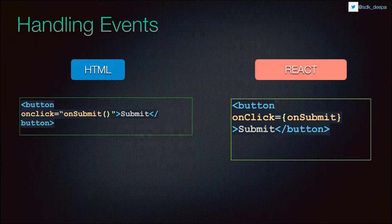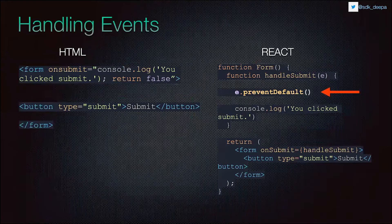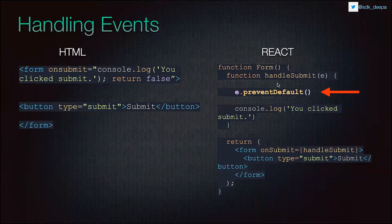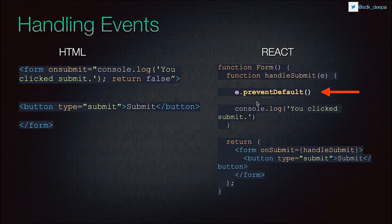Now let's talk about handling events. In HTML you pass event handlers as strings, but in React you pass them as JSX using camelCase — for example, 'onClick' instead of 'onclick'. Another difference is you cannot return false to prevent default behavior in React; you must explicitly use the preventDefault() method. React uses synthetic events supported across browsers, so you don't need to worry about cross-browser compatibility. A common use case is preventing submission of an empty form.